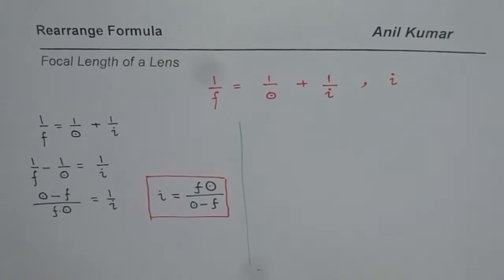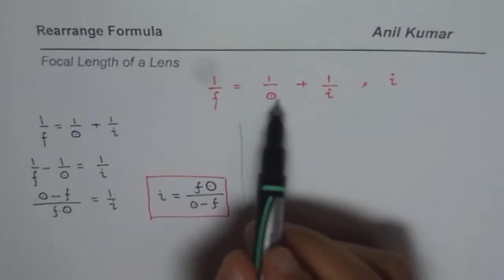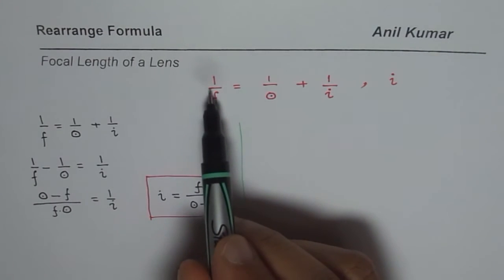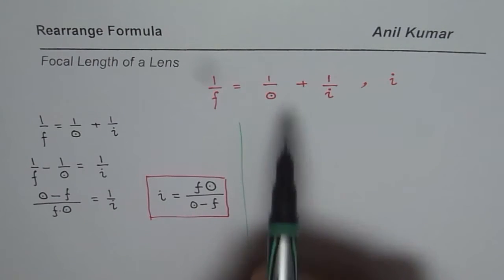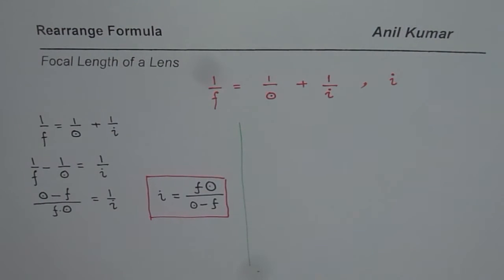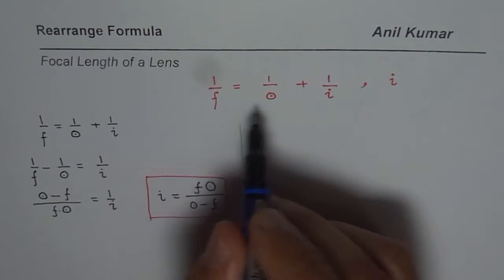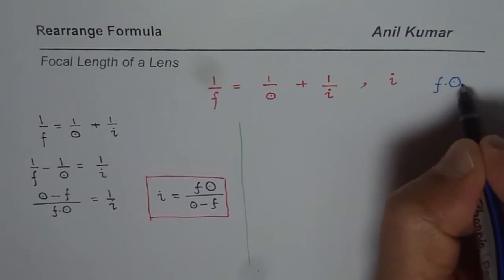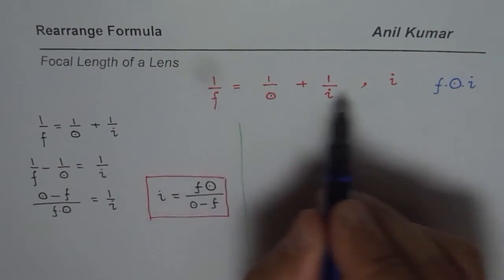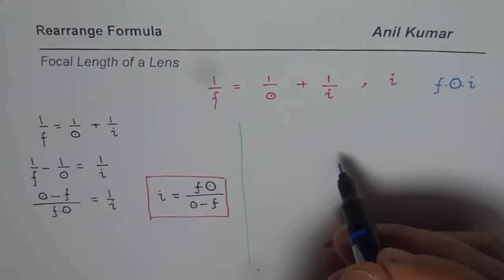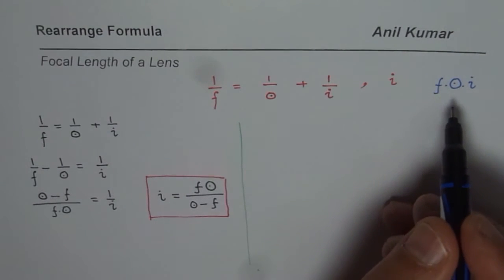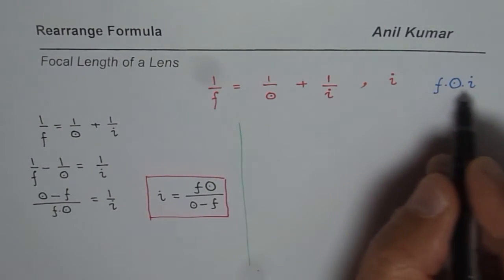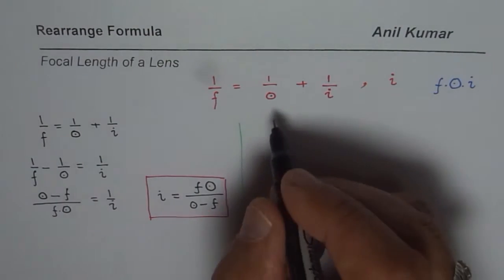Now I'll show you another way of rearranging — we'll find what F is from this formula. You cannot flip it directly because it involves addition. What we can do is multiply every term by the common denominator, which in this case is F times O times I. This gets rid of all fractions, and that is a strategy we'll use in many examples.